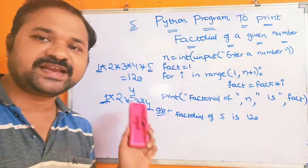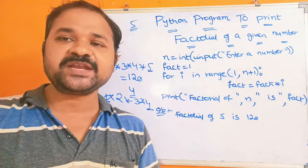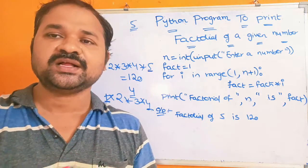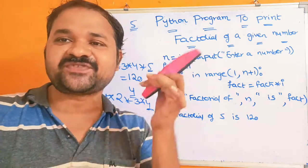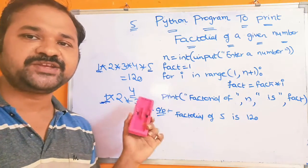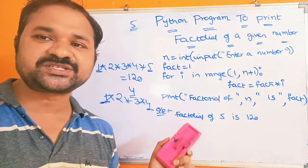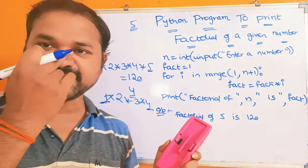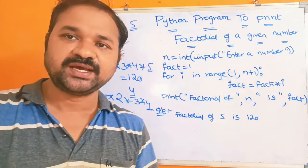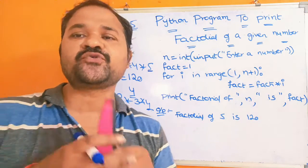Let the number be 4. Then in order to determine the factorial of 4, we have to multiply the digits from 1 to 4. So, 1×2×3×4: 1×2=2, 2×3=6, 6×4=24. So, 24 is the result of 4 factorial.